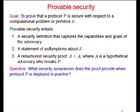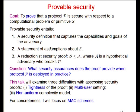So having done such a proof, the question one should always ask is: what practical assurances of security does the proof provide when you deploy the protocol in practice? This is both a very important and very difficult question. Today I want to talk about three difficulties with interpreting proofs in practice: tightness of proofs, the multi-user versus single-user setting, and the non-uniform complexity model.